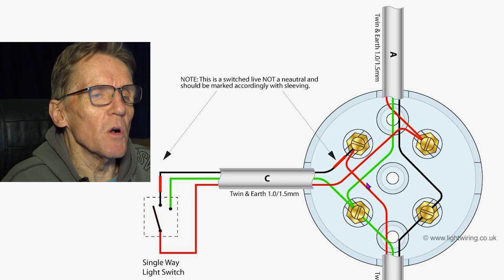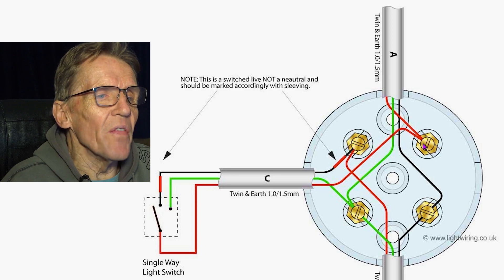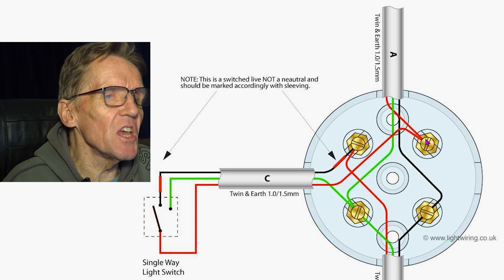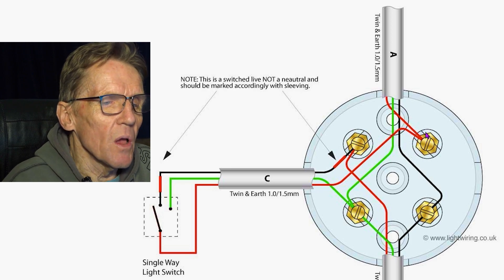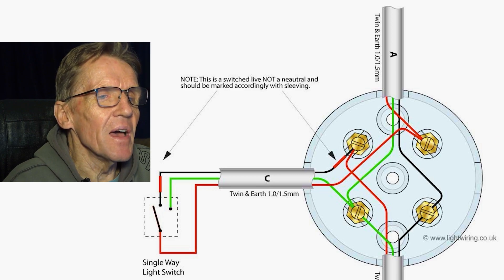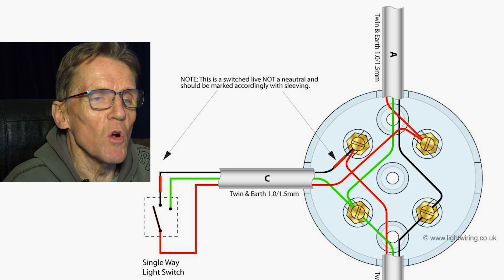Now that goes on to our next fitting—that live—so we would want that to continue going out to wherever we've got another fitting. So we would have another wire going out of there and it would go on to our next fitting. And similarly with the neutral, we'd have another wire going out to our next fitting.